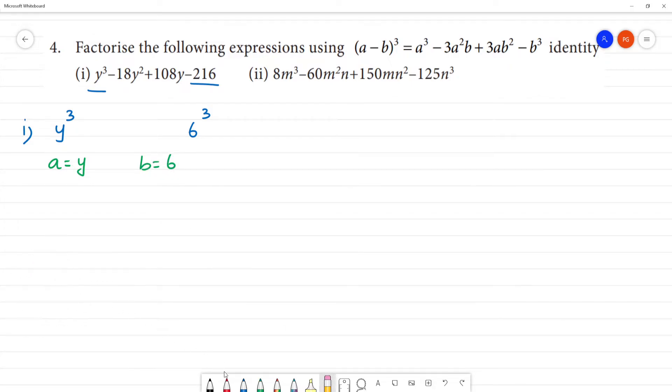If we look at the formula, y cube minus 3 into a square is y square, then b is 6, plus 3 into a is y, b square is 6 square, minus 6 cube.